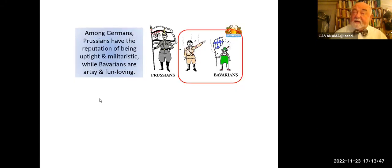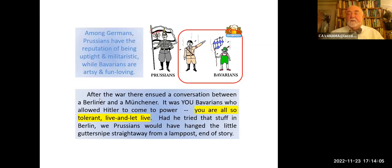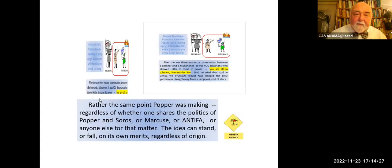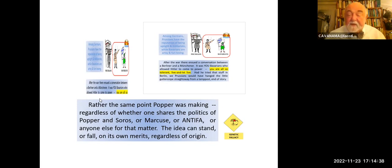Incidentally, among the Germans, Prussians have the reputation of being uptight and realistic, while the Bavarians are artsy, fun-loving, and live-and-let-live. They have Oktoberfest every year — a two-week-plus celebration. But that's where Hitler got his start, in Munich. After the war, there is a story — it may be an urban legend but could well be true — a conversation between a Berliner and a Münchener. The Berliner said angrily: 'You Bavarians who allowed Hitler to come to power, you are also tolerant, live and let live.' And he said, 'If he had tried that stuff in Berlin, we would have hanged the little corporal from the nearest lamppost.' Regardless of whether one shares the politics of Popper and Soros, Marcuse, Antifa, or anyone else, the idea can stand or fall on its own merits regardless of its origin.